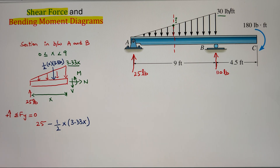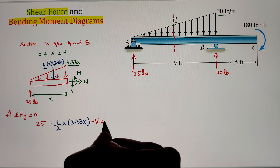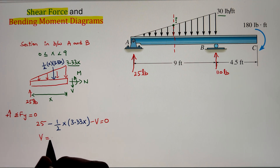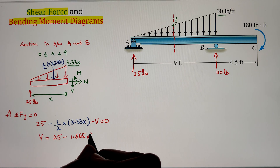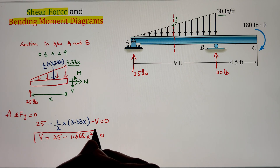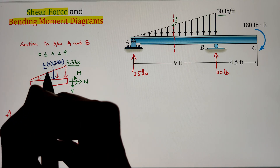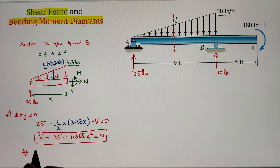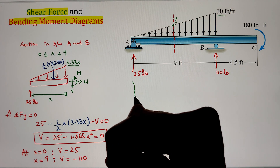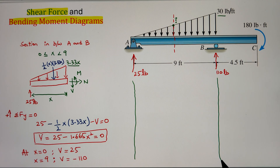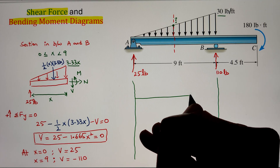Once we have all the forces, let's write our equilibrium equation of summation of forces in the vertical direction, taking upward as positive. Here 25 pounds is going upward so taken as positive, and our point load going downward is negative half times X times 3.33X. And then we have our shear force going in the downward direction as negative V. This gives us our expression of shear force. Once we have our expression, we need to plug in the values of X at the two extremes: at X equals 0 we get a shear force value of 25 pounds, and at X equals 9 we get a value of negative 110.